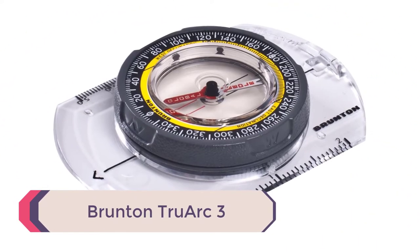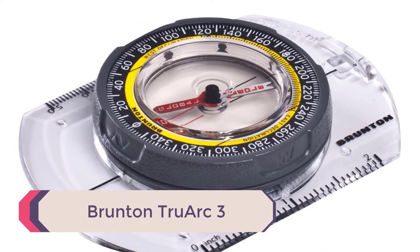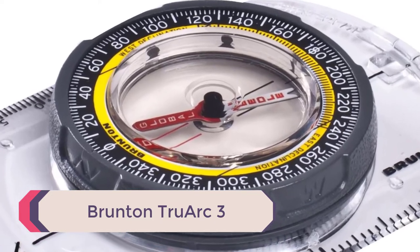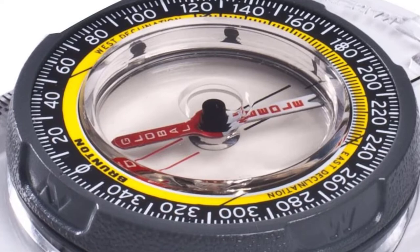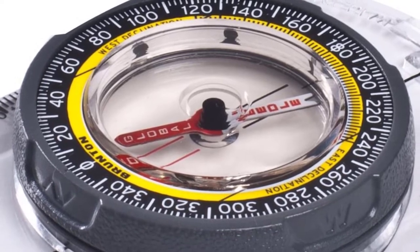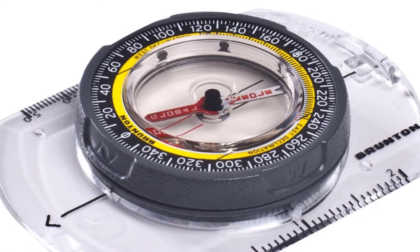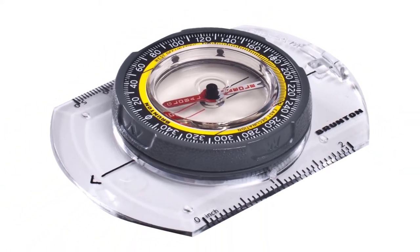Number 1: Brunton Truarch 3. The Truarch 3 is a reliable compass for basic orienteering and mapping that you can take with you anywhere. Its simple ease of use makes it ideal for entry-level navigators. Or since it's a compactly designed compass, it's also an excellent backup compass.